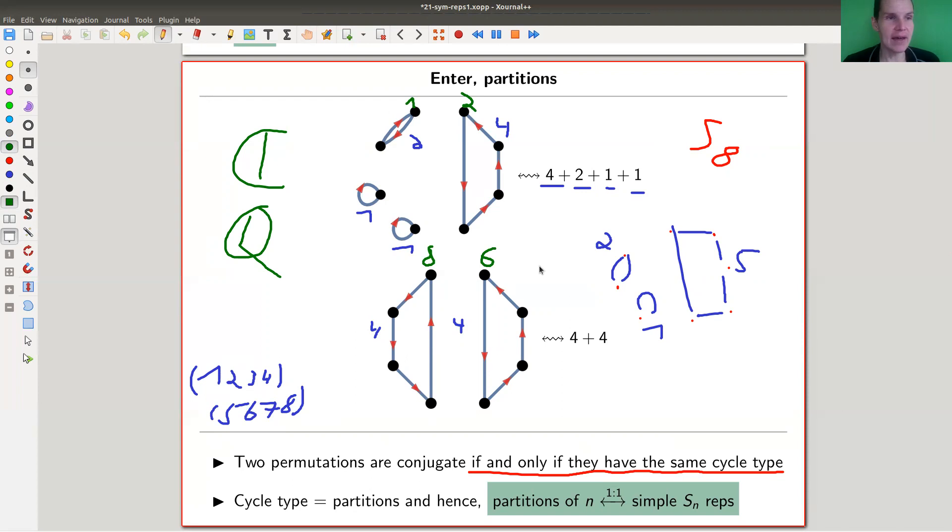by conjugating elements with symmetric group elements is a relabeling operation. So it actually doesn't matter how I relabel my vertices. I get all labelings anyway by conjugating with the correct permutation.